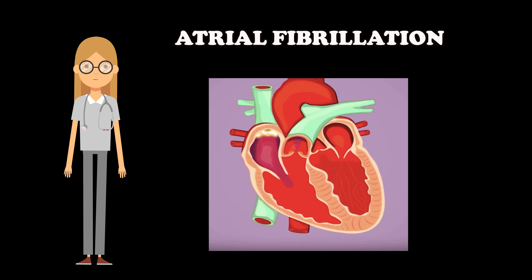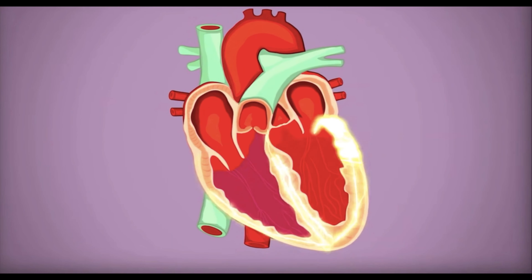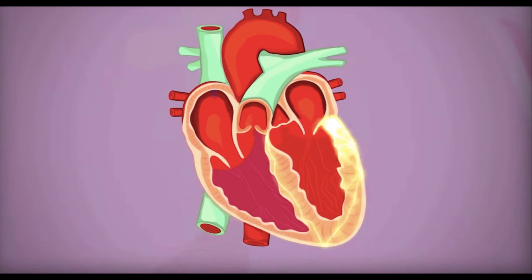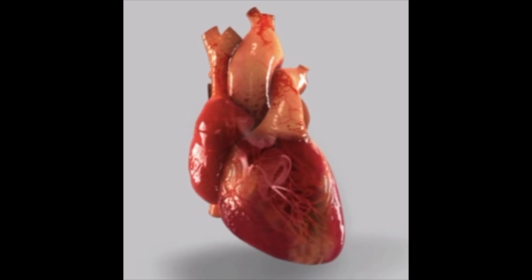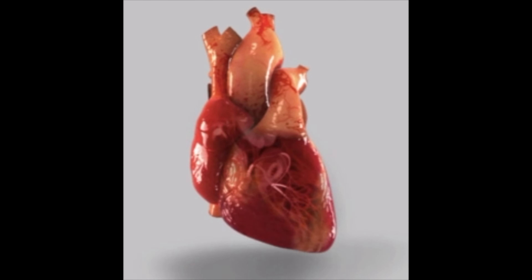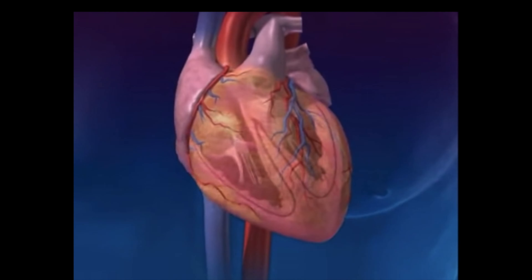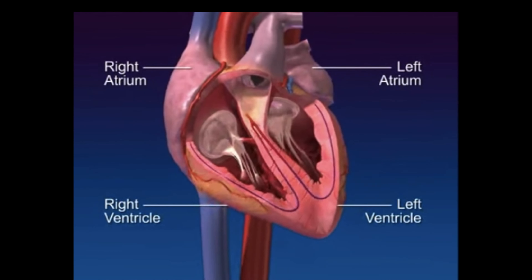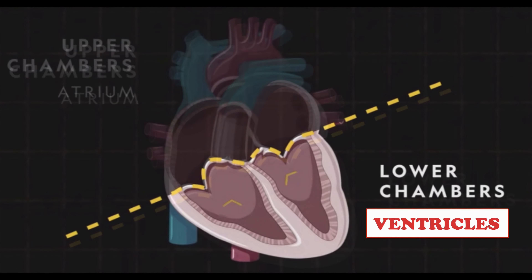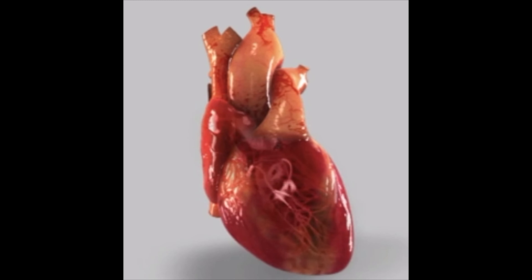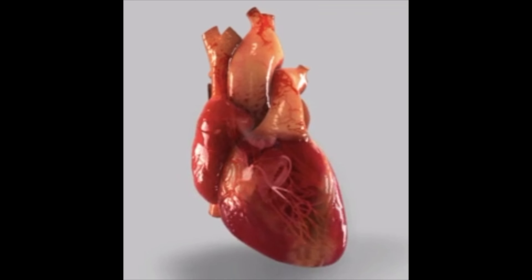Before explaining what atrial fibrillation is, it helps to understand the normal heart rhythm. The heart pumps blood to the rest of the body during each heartbeat. The two upper chambers of the heart, which are the atria, contract followed by the two lower chambers, which are the ventricles. These actions, when timed perfectly, allow for an efficient pump.